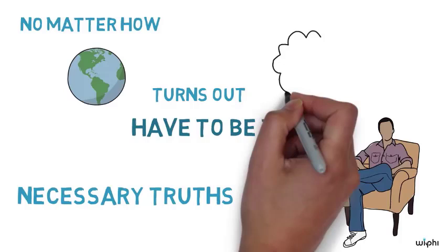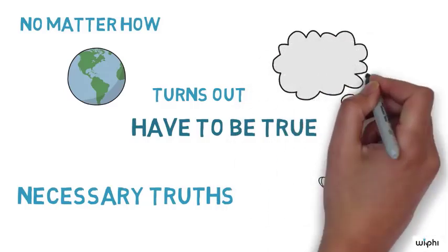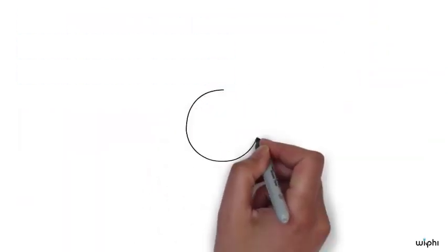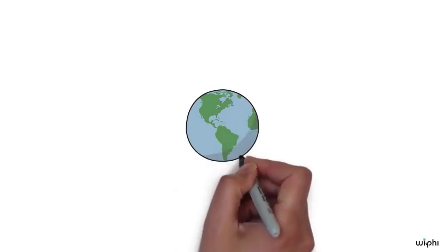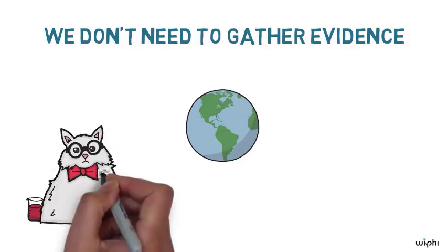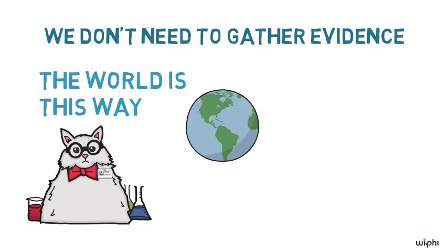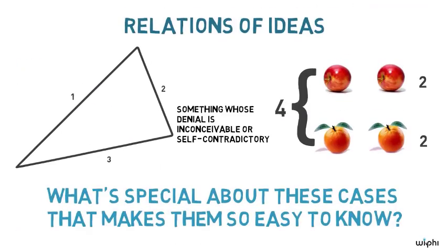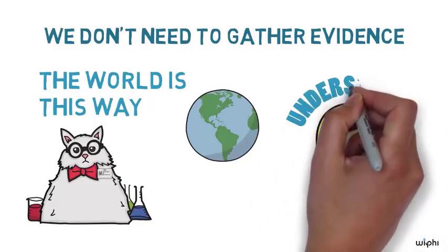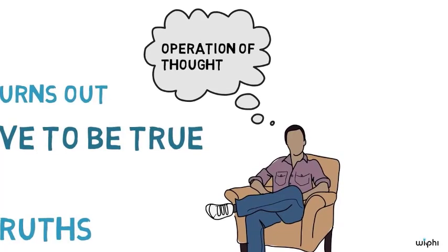To quote Hume, he said that propositions of this kind are discoverable by the mere operation of thought without dependence on what is anywhere existent in the universe. What does that mean? Why does he think it's true? I take it the idea is something like this. If some claim is a relation of ideas, then it will be true no matter what the world is like. So in order to know that it's true, we don't need to go out and gather evidence about what the world is like. The evidence might tell us the world is this way rather than that way, but no matter what way the world is like, all triangles will have three sides. Two pieces of fruit and another two pieces of fruit will make four pieces of fruit. So if anything at all is required to know that a relation of ideas is true, it's just understanding it. This is what Hume called the mere operation of thought. That's enough to see that it has to be true, and so to know that it's true.